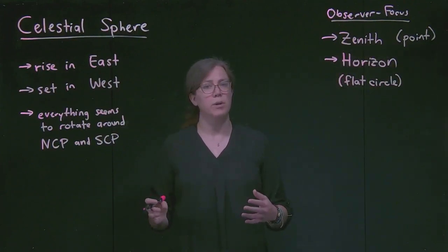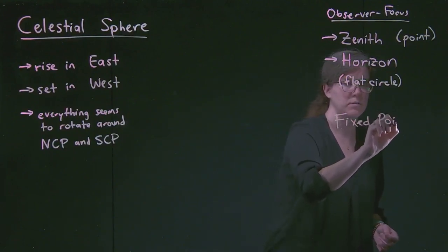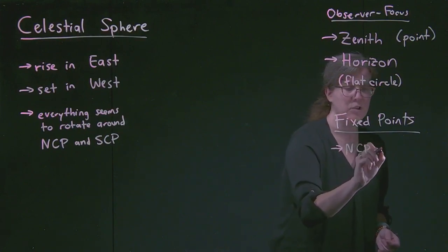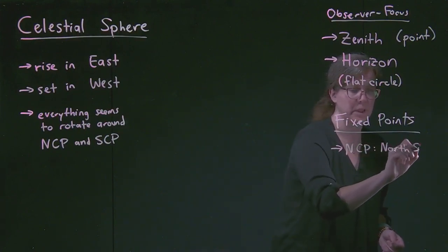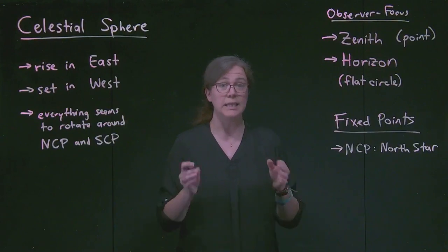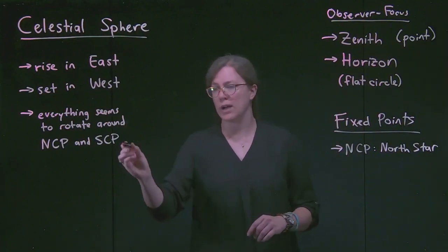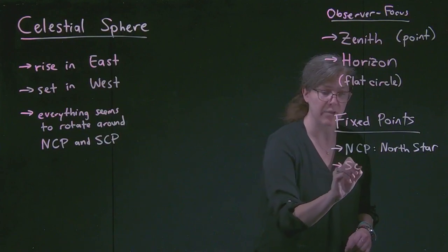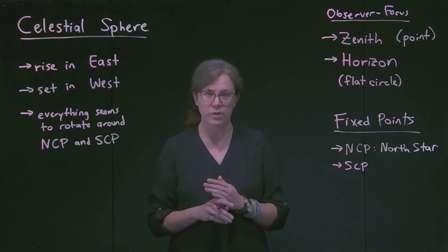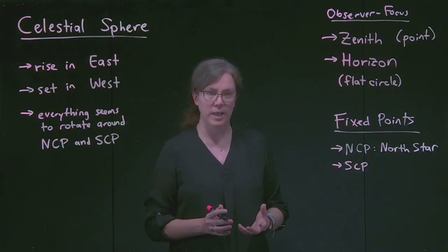We also have fixed points in space. One of the most important ones is the North Celestial Pole, and that is also where the North Star is found. This idea that the North Star, Polaris, is at this special point in space is really essential to us, so we'll be coming back to that. We also have the South Celestial Pole. They don't have a South Star, which is quite a bummer for them. They have a set of four stars called the Southern Cross that points towards the point in space where everything seems to rotate around, but they don't have a South Star.